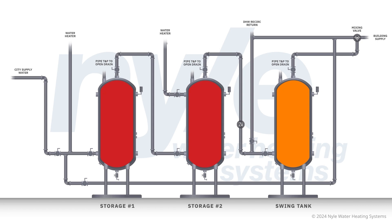Imagine our system has heated the tanks, yet no hot water has been used by the building. In this state, our first two storage tanks hold hot water, while the swing tank, located at the far right, is handling heat loss from the building recirculation and is at a lower temperature.